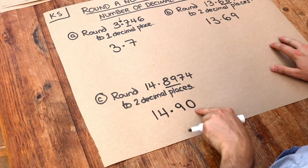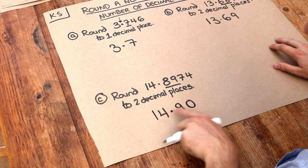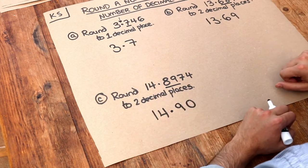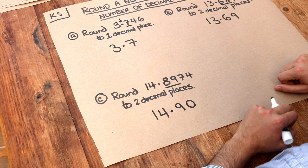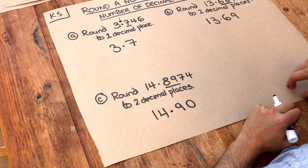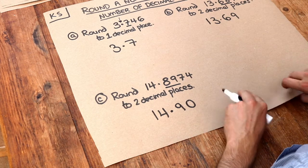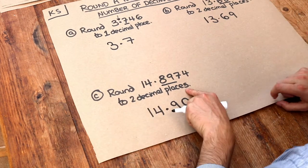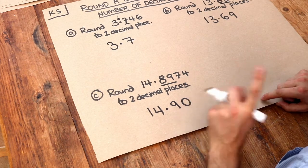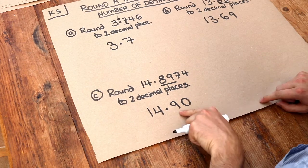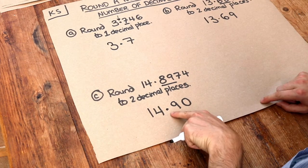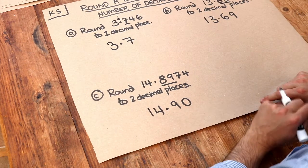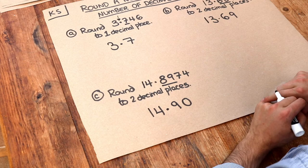You might wonder whether we need that zero, because 14.9 is the same as 14.90, isn't it? However, because we said we want it to two decimal places, we do have to give two digits after the decimal point. And that's indeed what we have done.